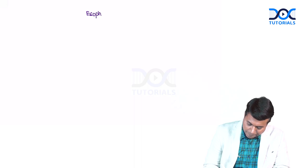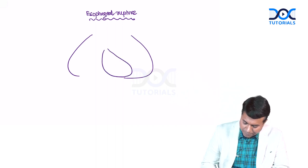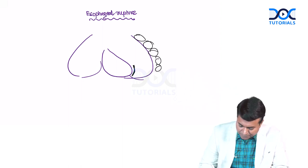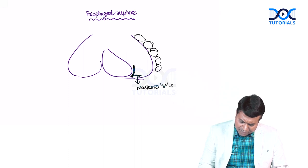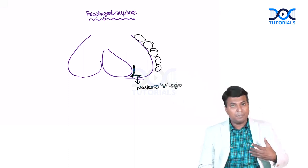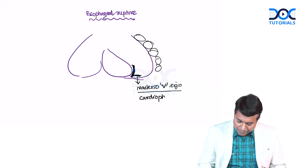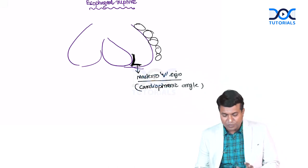On X-ray in esophageal rupture, you can see subcutaneous emphysema in the chest. Another X-ray finding is the Naclerio V-sign: a V-shaped air shadow in the mediastinum at the level of the cardiophrenic angle. This is a classical finding of esophageal rupture — please do not forget it.